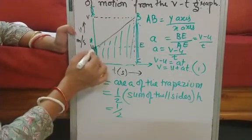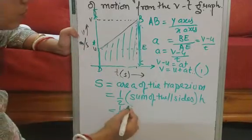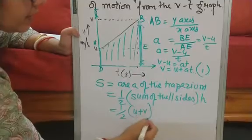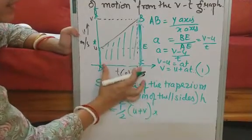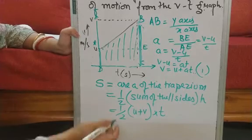Let's see. Parallel side is this and this. This much is u. And this is v. Into height is this, which is t. Correct.